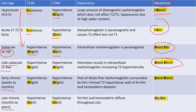Then we come to 'BLEED BLEED' for late subacute hematomas — the T1 image is bright and the T2 image is also bright. Then for early chronic hematomas, it is 'BLEED BLEED' again — T1 is bright and T2 is also bright.